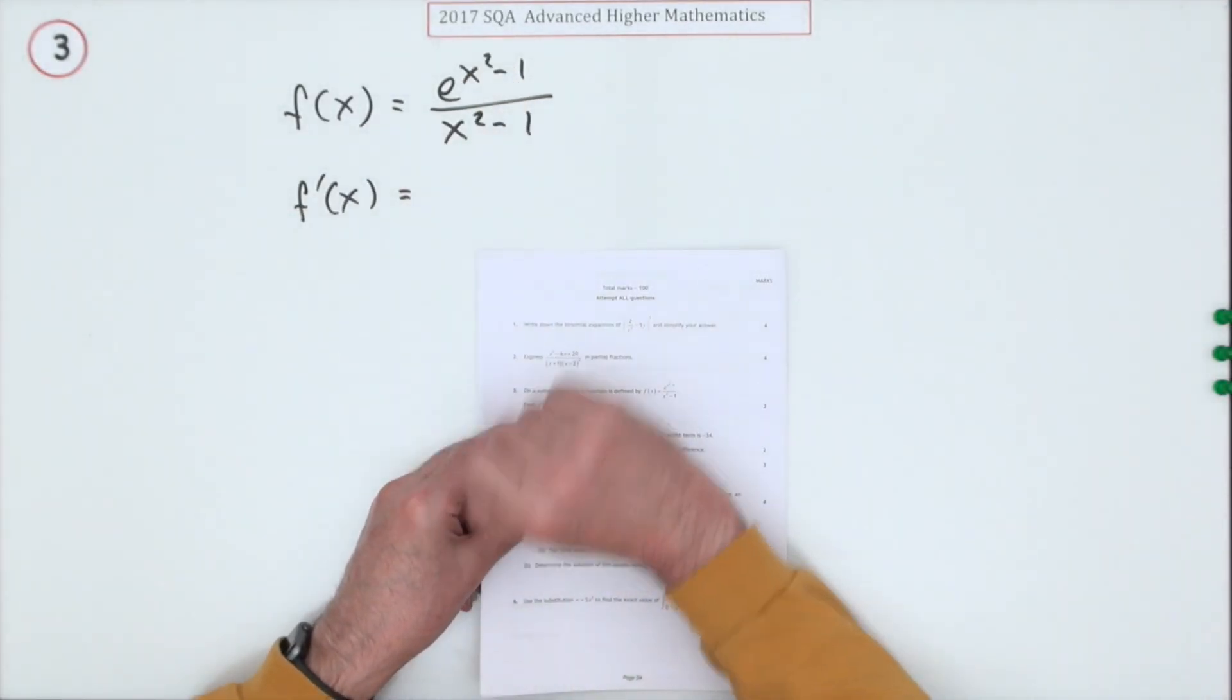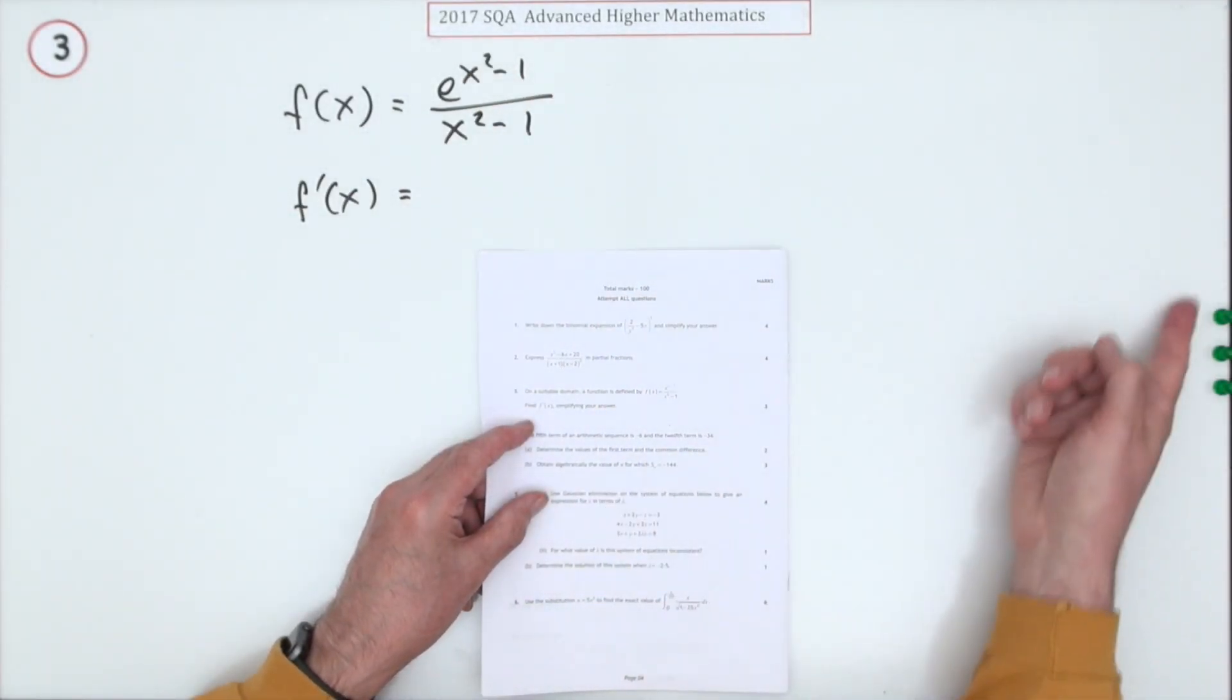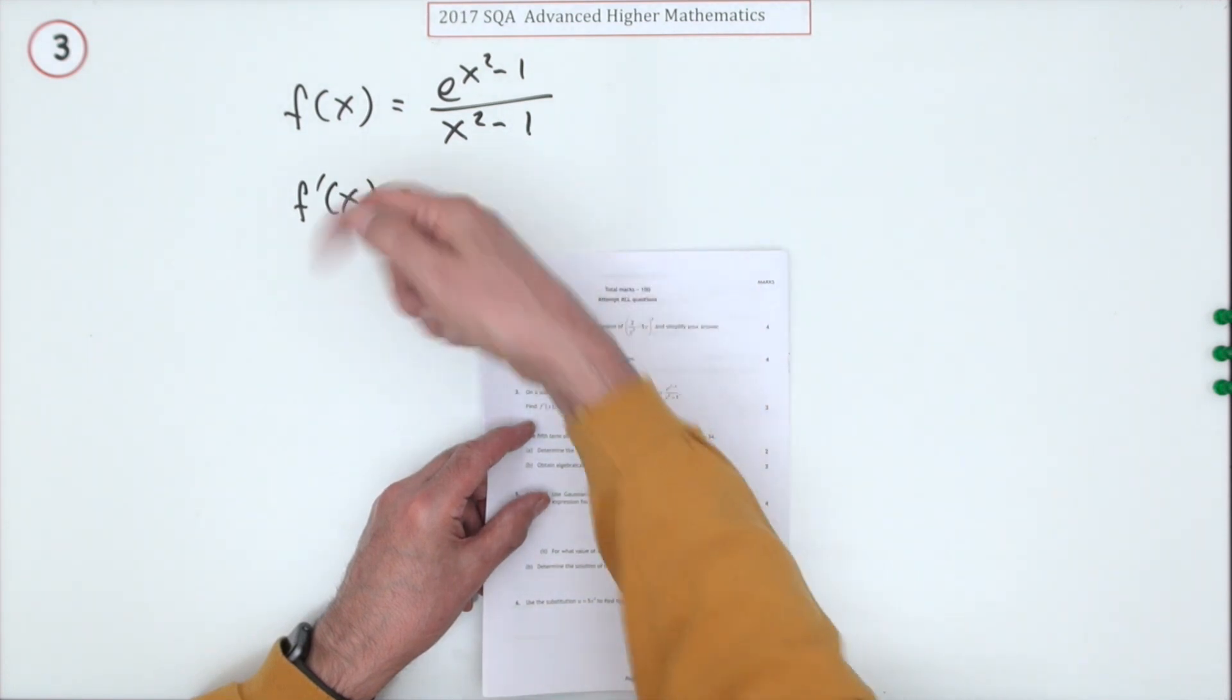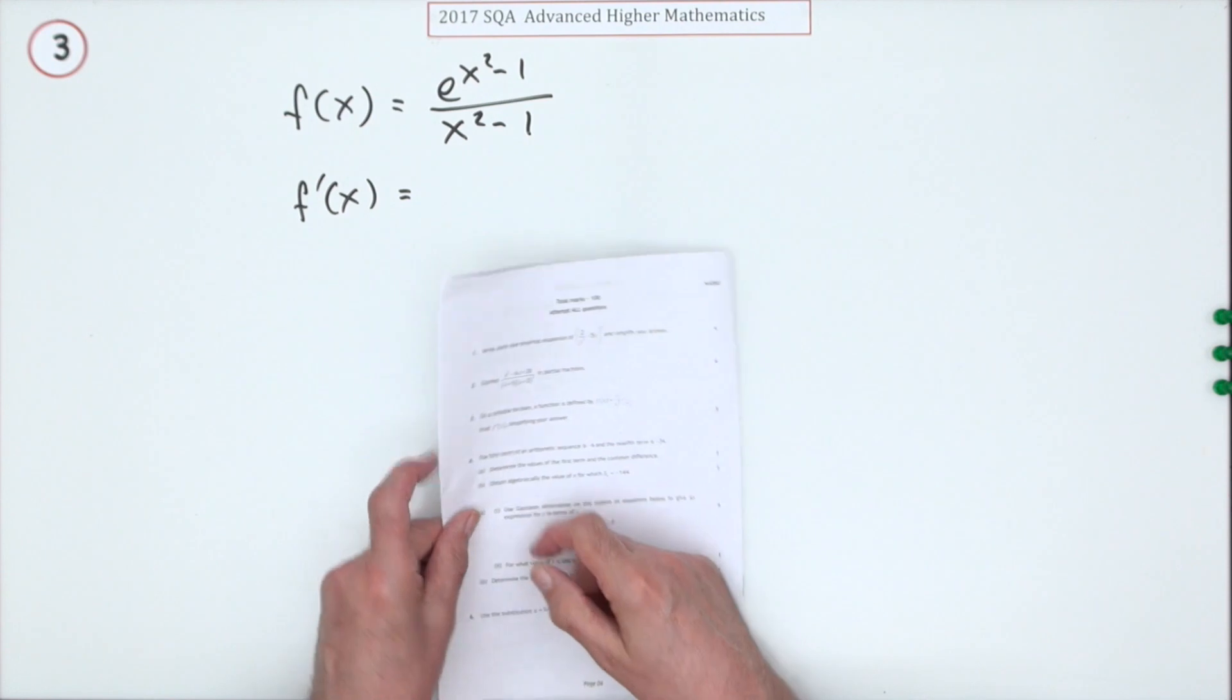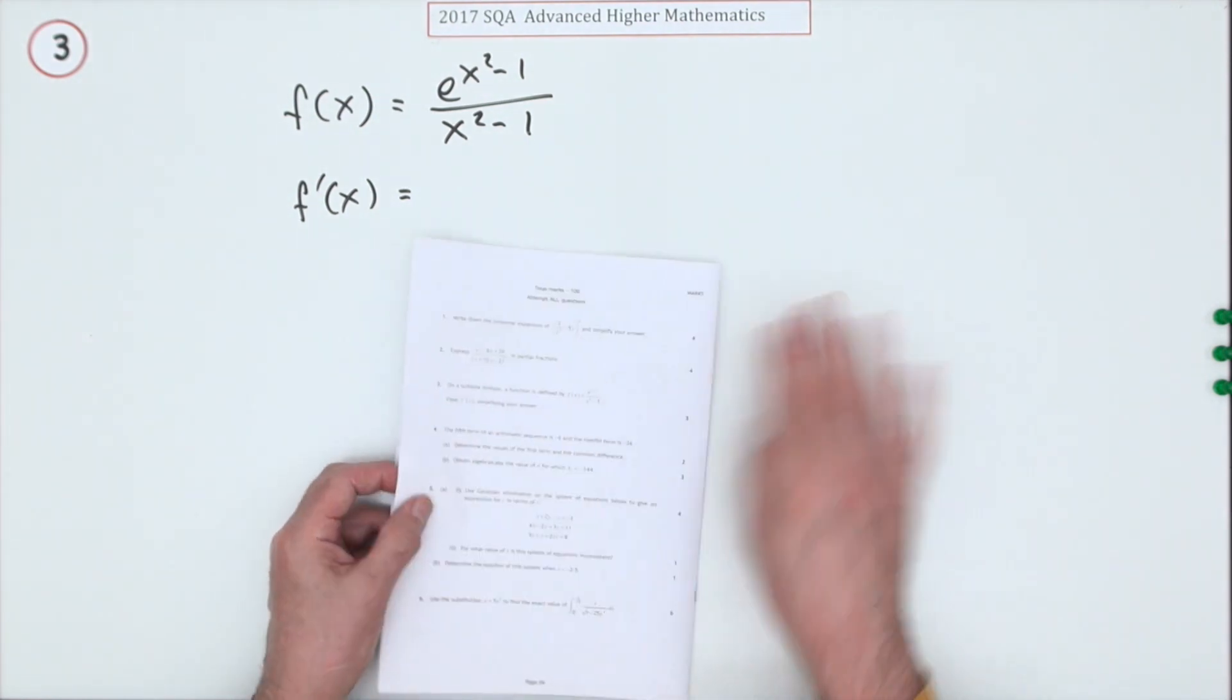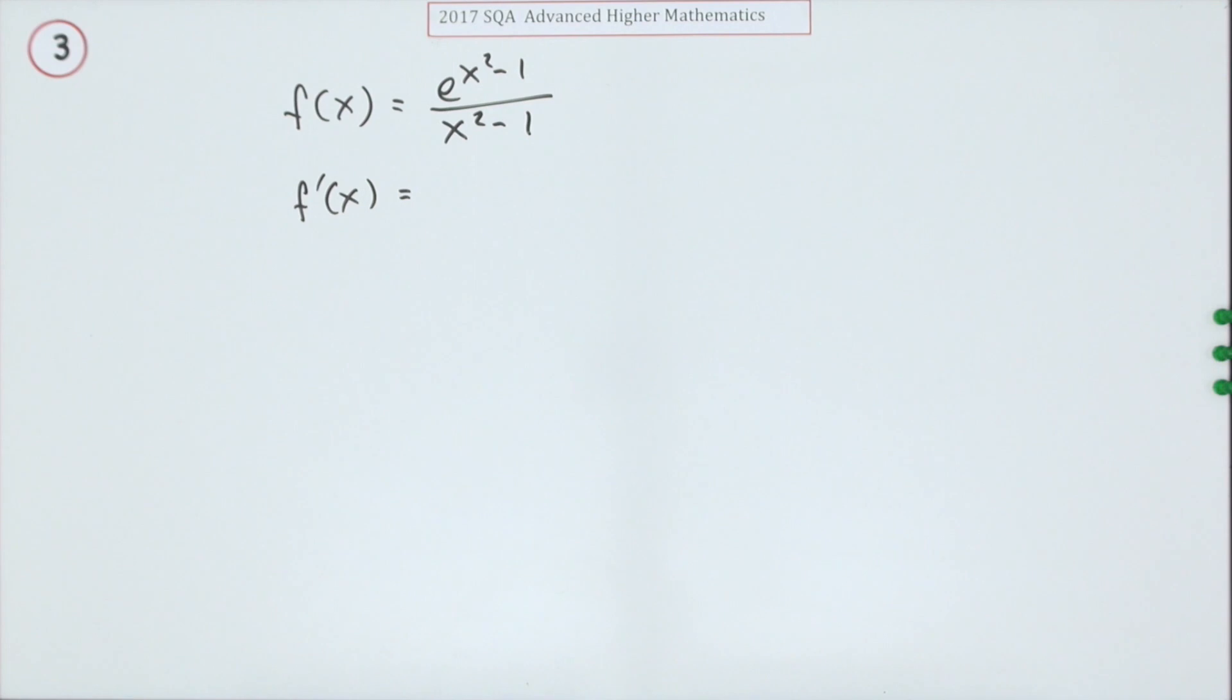Number three from the 2017 Advanced Higher Maths, three marks. Differentiate this using the quotient rule. We'll quickly check the front - it's not there, so you'll need to know it, but it is just a pattern after all.